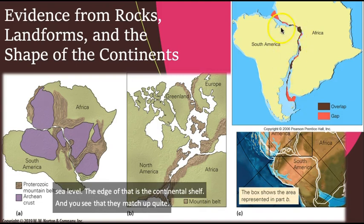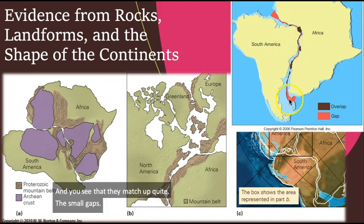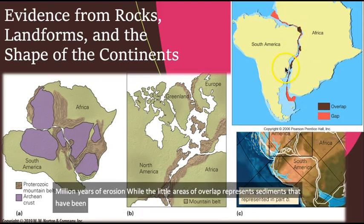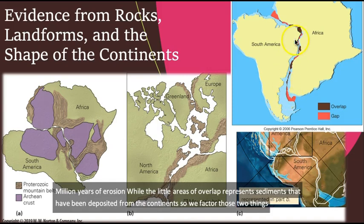The small gaps are the result of 200 million years of erosion, while the little areas of overlap represent sediments that have been deposited from the continents. So if we factor those two things in, they essentially fit together perfectly.